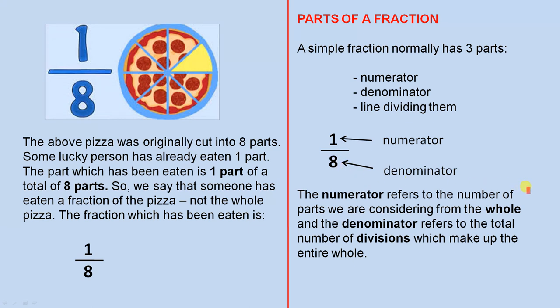The numerator refers to the number of parts we are considering from the whole and the denominator refers to the total number of divisions which make up the entire whole. So here we are considering this one part which has been eaten, and the pizza has been divided into eight equal parts.